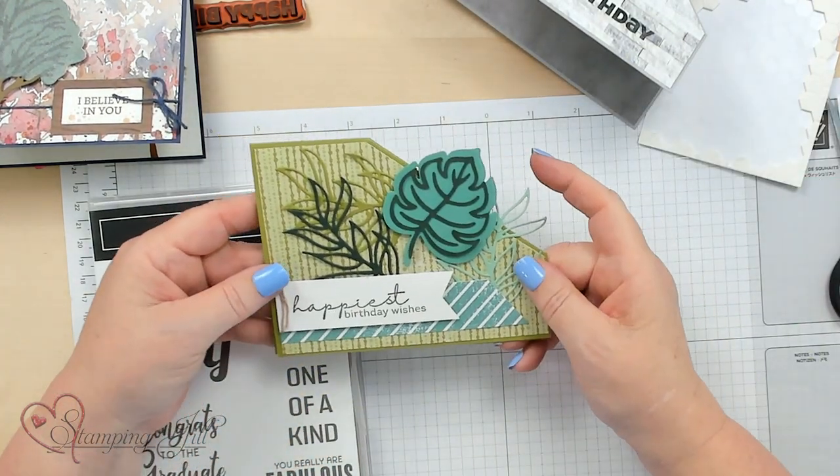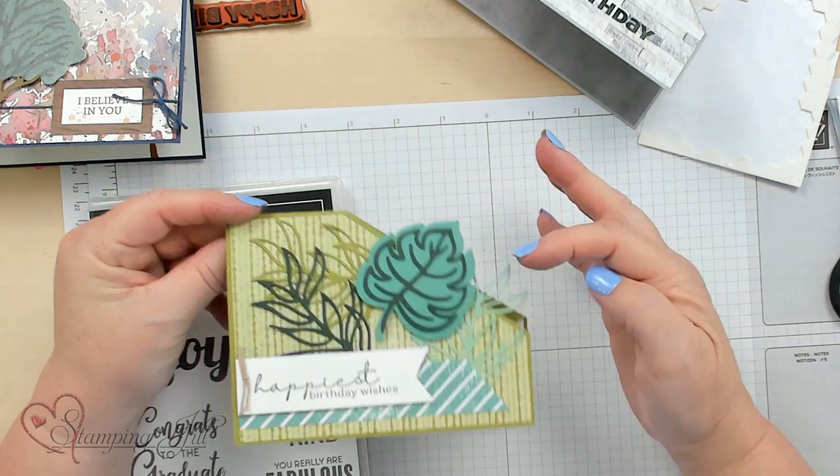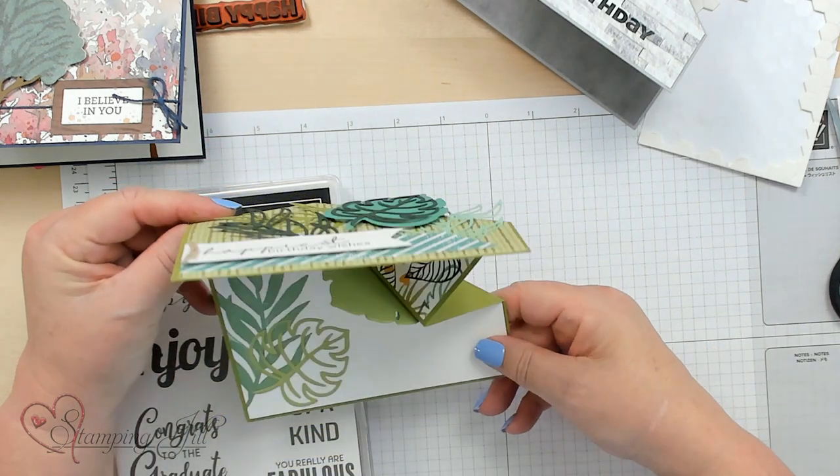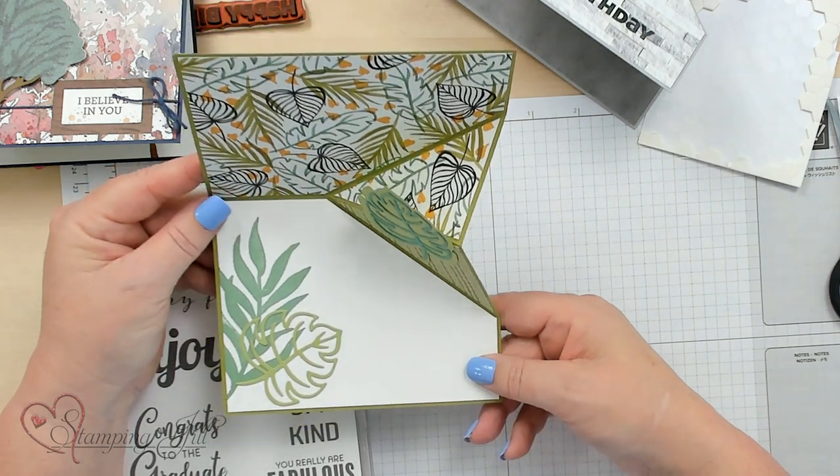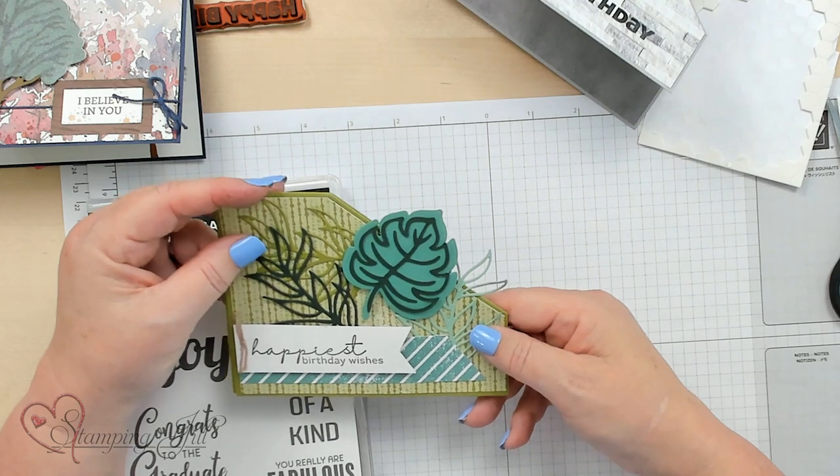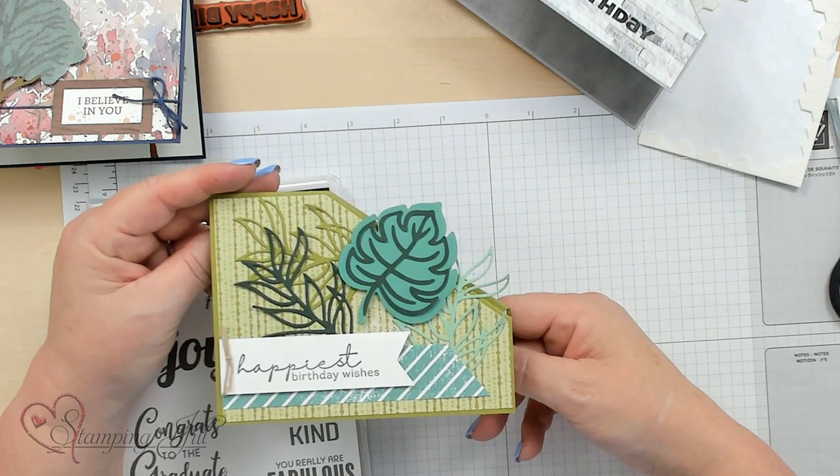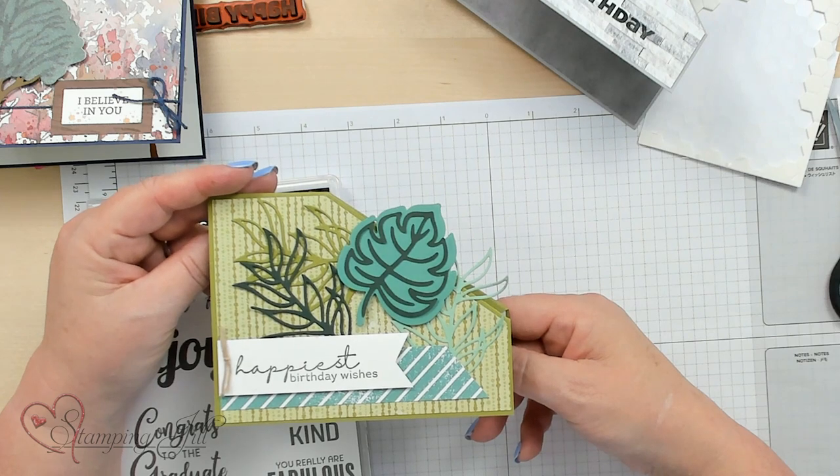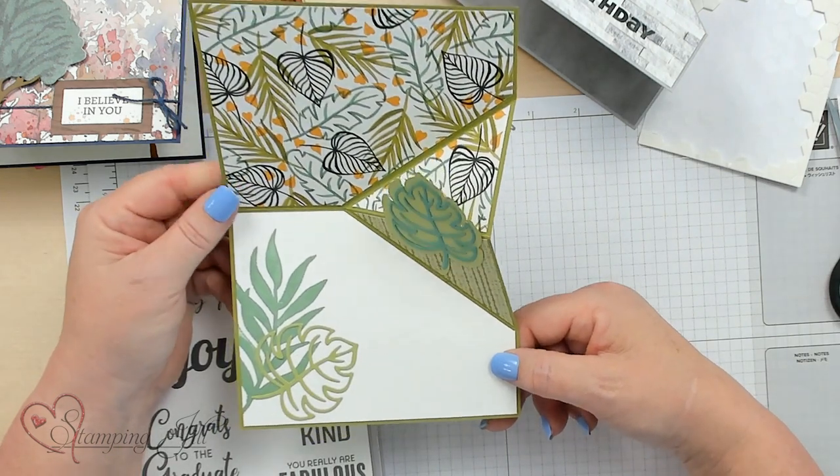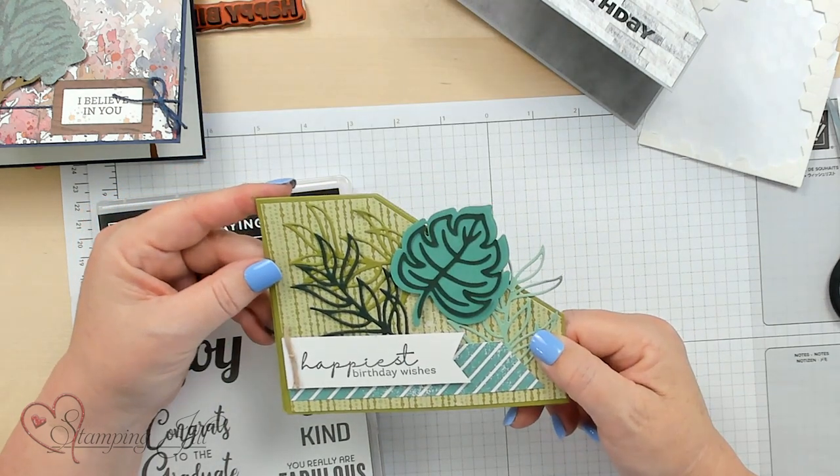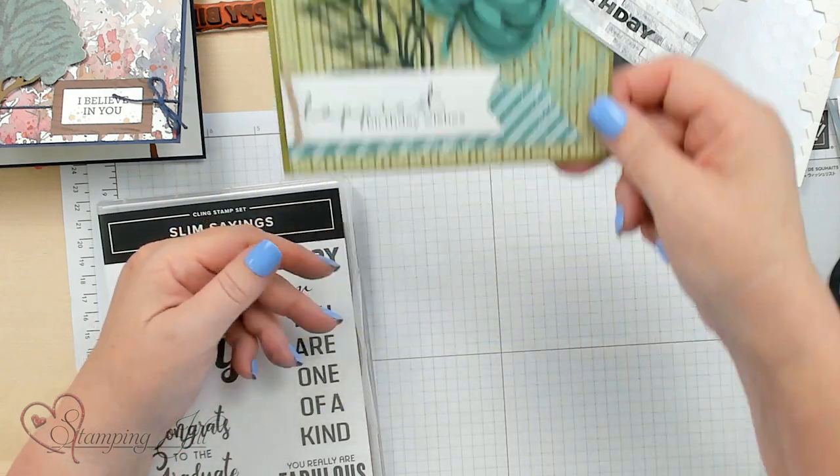This one here is Happiest Birthday Wishes and it's also done on the side like that. This is also being retired and the name of this stamp set is Artfully Layered. The DSP with this is called Artfully Composed and it works great for a masculine card. It is going to be retired so if you love this look, now is the time to get it.